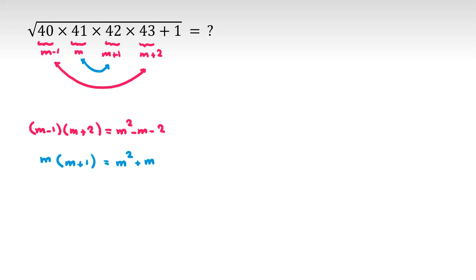You can use some tricks, but a better approach is to change variables. Let's consider n. Changing the variable is always helpful — consider one of the numbers as n. Using the Gauss idea: n times n plus 3 equals n squared plus 3n.